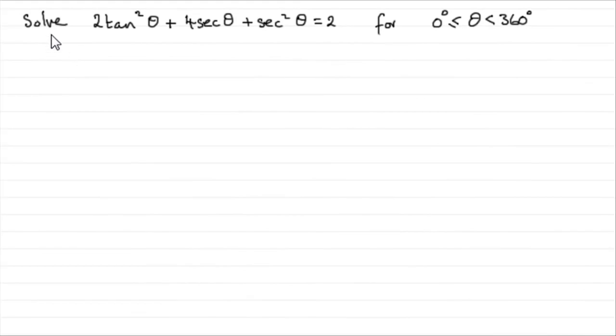Now in this part of the question we've got to solve 2tan²θ + 4secθ + sec²θ = 2 for θ greater than or equal to 0 degrees but less than 360 degrees. To solve a trig equation like this we've got to make sure that they're all in the same trig function.